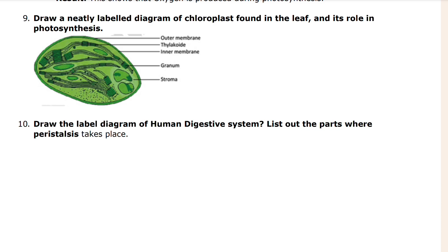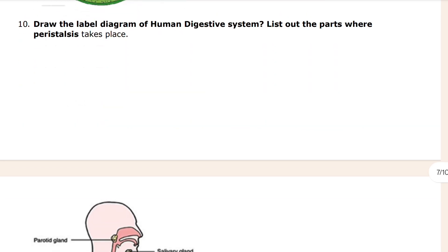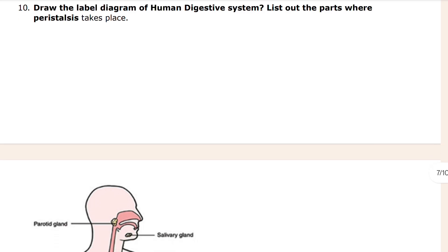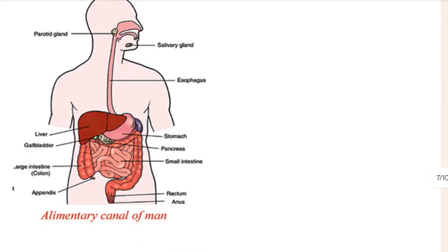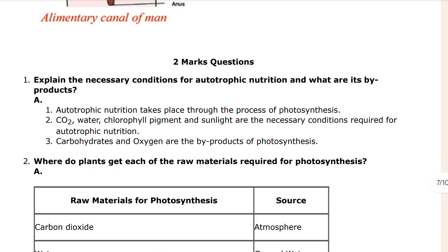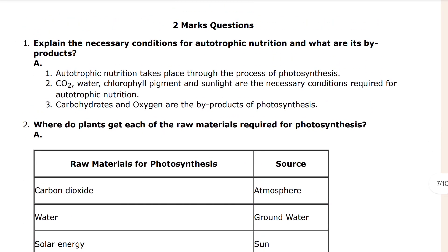The ninth question: draw a neatly labelled diagram of chloroplast. There is a picture of that here. Also covered are every gland and the stomach, pancreas. Here are the two-mark questions as well.